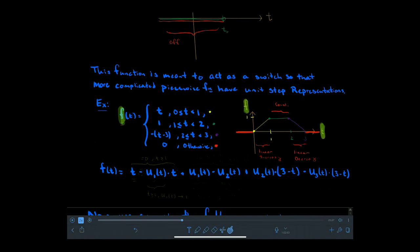At time zero the function becomes f equal to t — it needs to stay that way up until the key moment at one second, where the linearly increasing part must turn off. I introduce the turn-off by bringing in a negative: at time one second u-one of t becomes one and multiplies t, so I get t minus t which equals zero for all t greater than or equal to one second.